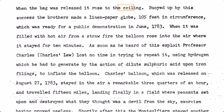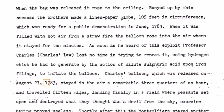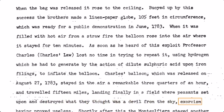When the bag was released it rose to the ceiling. Buoyed up by this success the brothers made a linen paper globe, 105 feet in circumference, which was ready for a public demonstration in June 1783. When it was filled with hot air from a straw fire the balloon rose into the air where it stayed for 10 minutes. As soon as he heard of this exploit, Professor Charles — of Charles's Law — lost no time in trying to repeat it, using hydrogen, which he had to generate by the action of dilute sulfuric acid upon iron filings, to inflate the balloon. Charles's balloon, released on August 27, 1783, stayed in the air a remarkable three-quarters of an hour and traveled 15 miles, landing finally in a field where peasants set upon and destroyed what they thought was a devil from the sky, exorcism having proved useless.